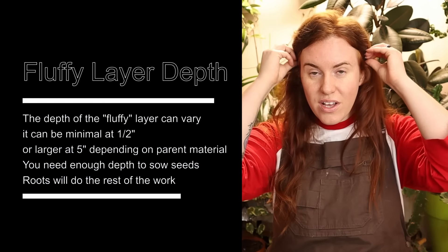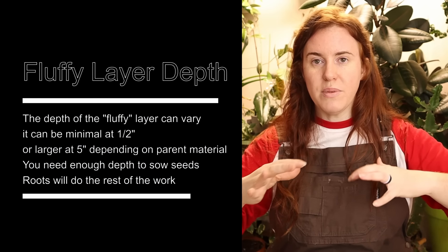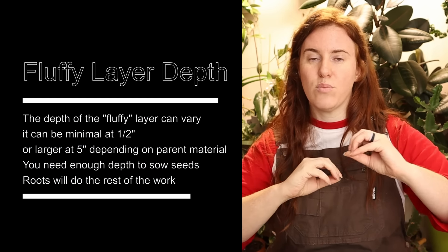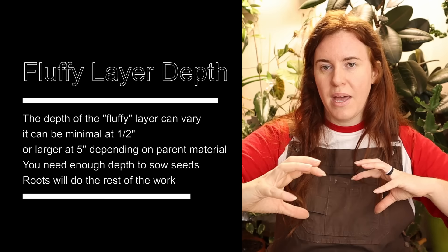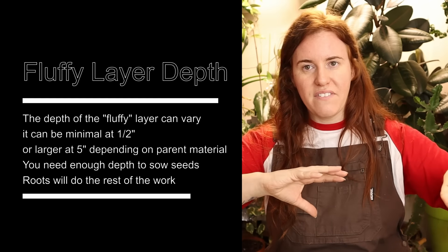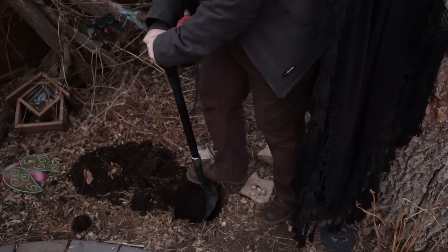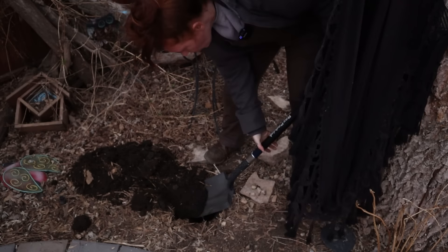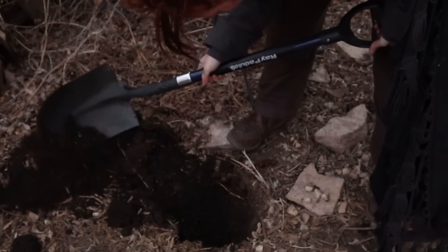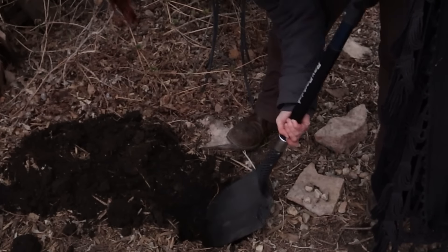Soil also becomes more compacted the deeper you go — that's very normal. The soil on the surface has more root material, more humus, more organic matter, so it's light and fluffy. As you get down deeper, as a kid you'd hit the clay or the hard level. That's normal, that's supposed to be there, and it doesn't harm anything — it's just how soil works.